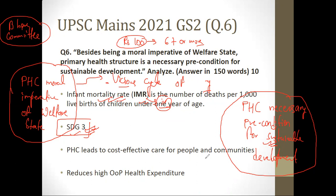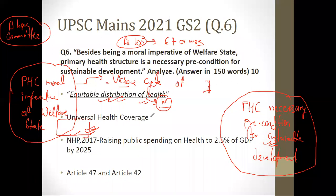The second point is that effective primary health structure helps achieve Universal Health Coverage — where everybody gets access to healthcare. Effective primary health structure would help achieve Universal Health Coverage, thereby furthering the tenets of sustainable development. Keep linking your answer back to the question so the examiner knows you are not deviating from the topic.